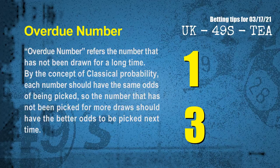The final information for you is overdue numbers. An overdue number refers to a number that has not been drawn for a long time. Also by the concept of classical probability, each number should have the same odds of being picked, so the number that has not been picked for more draws should have better odds to be picked next time. After counting thousands of results, we find out the most overdue two numbers for you, which are 01 and 03.